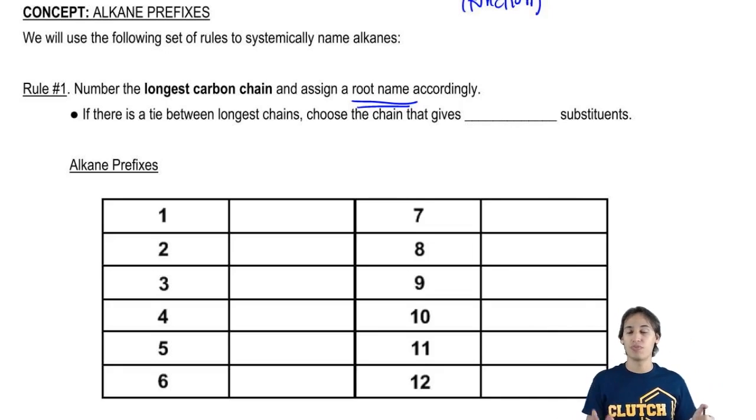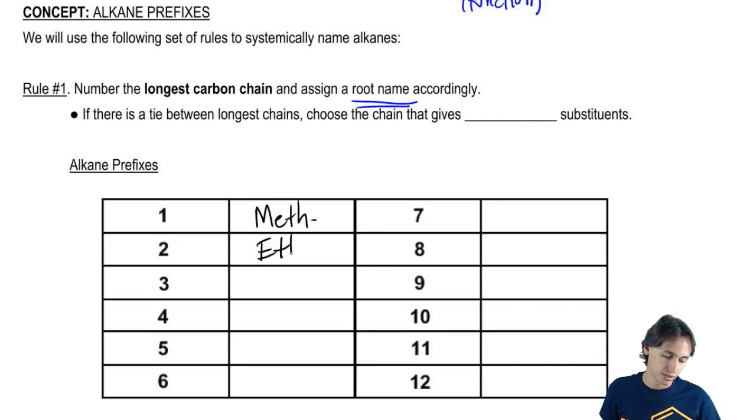What would be the prefix for one carbon? It would be meth. So we have meth, then the second one, so two carbons would be eth. And you guys can maybe start saying these with me because maybe you know some of them from Gen Chem or you learned them in class.